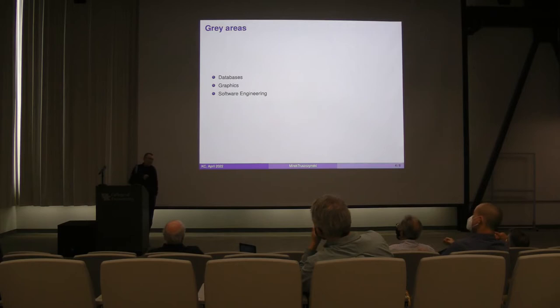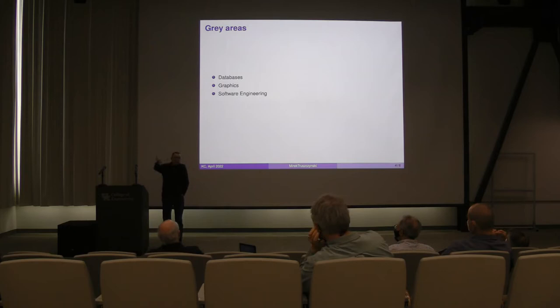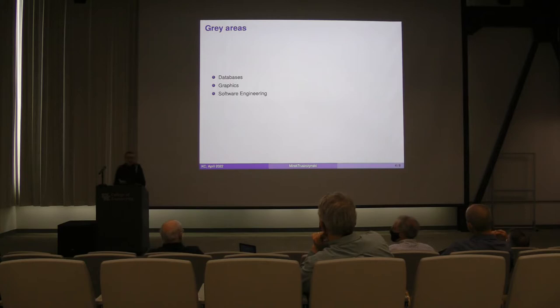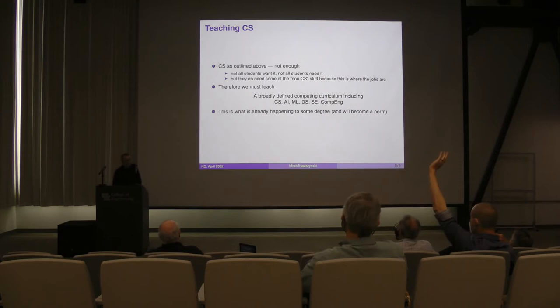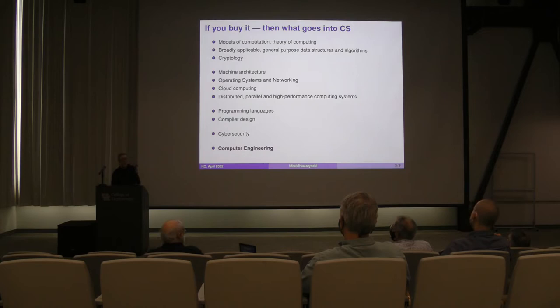Software engineering, for a different reason, is in my opinion a grey area — perhaps not entirely in CS, but not necessarily outside CS. Human-computer interaction is in CS — if it's not in my list, it is simply because at some point it disappeared from the slide. So, teaching: when you think about what is CS, teaching only what I've put in CS is not enough. Not all students want only this, and not all students will need it. But they do need a lot of things that I classify as non-CS, because that's where the jobs are.